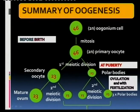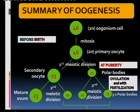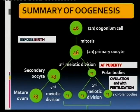After ovulation and with fertilization, the mature ovum undergoes the second meiotic division, resulting in three polar bodies. You have four cells in total, but the three polar bodies do not become ova — they simply do not develop. It is important to remember that.